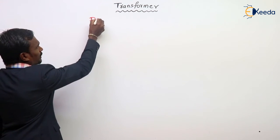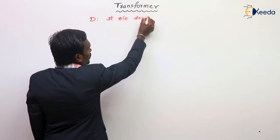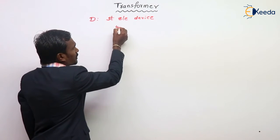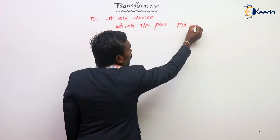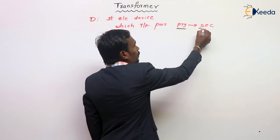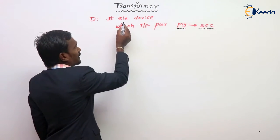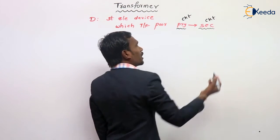First of all, what is the definition of transformer? Many students have an idea what a transformer is. So, transformer is nothing but a static electrical device which transfers the power from one circuit to another circuit, which are called as primary and the secondary.